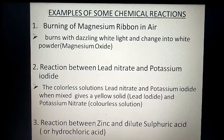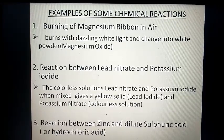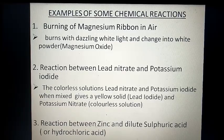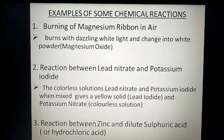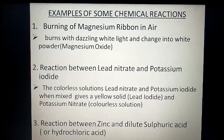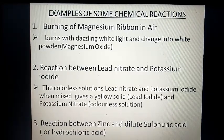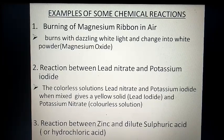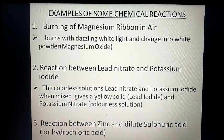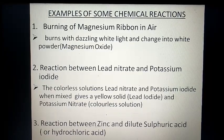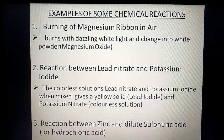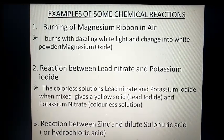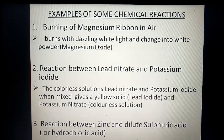So the first reaction is burning of magnesium ribbon in air. Magnesium ribbon is easily available in the laboratory. When the magnesium ribbon is burned, there is a dazzling white light, a bright white light formation. And we observe that there is some white powder that falls down. This white powder is magnesium oxide. So in this reaction, magnesium reacts with air, meaning oxygen, and forms magnesium oxide. So this is a chemical reaction.